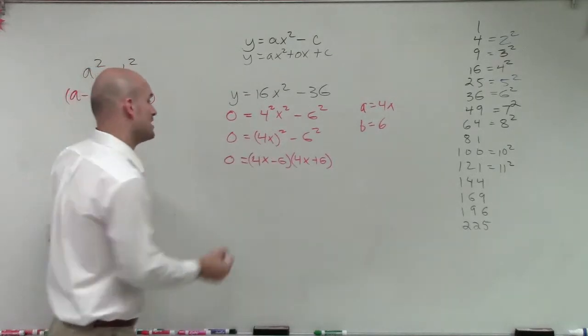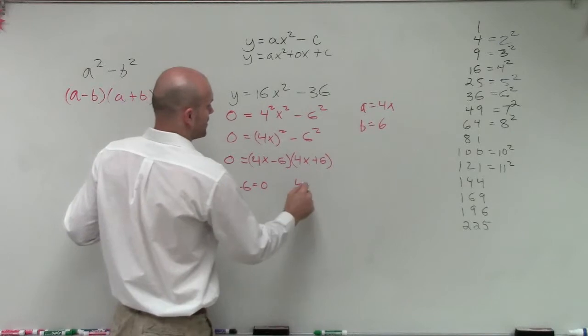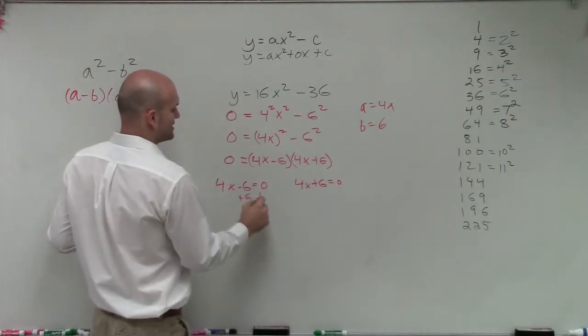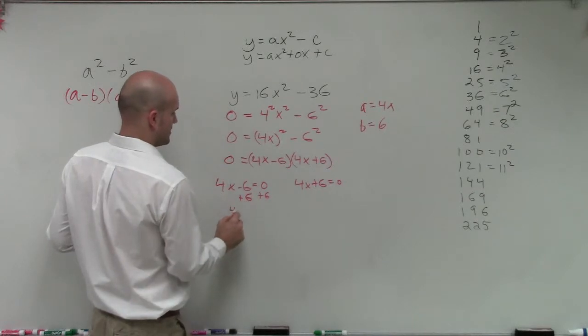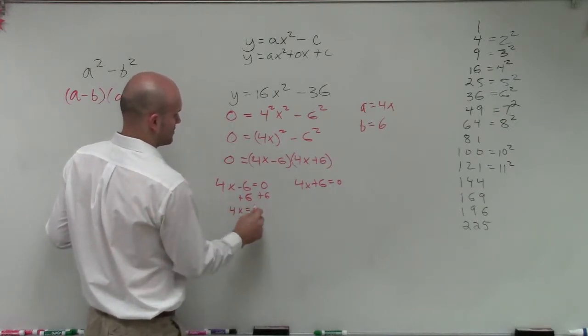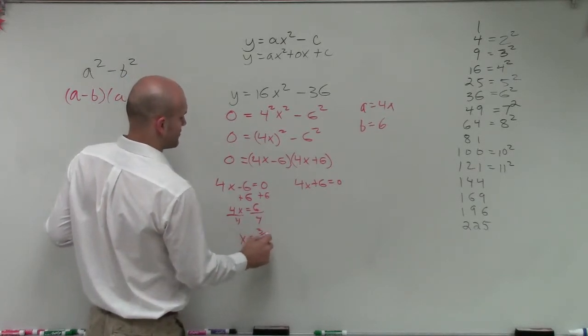Now, I can apply the zero product property to solve for each one. 4x minus 6 equals 0, and 4x plus 6 equals 0. Therefore, I add 6 on both sides, 4x equals 6, divide by 4. x equals 3 halves.